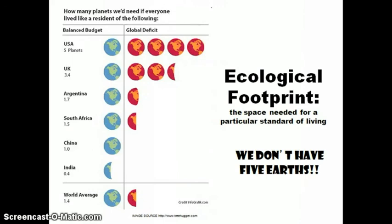A lot of talk today is about our ecological footprint. Biologists often talk about carrying capacity. An ecological footprint is the estimation of biologically productive space — land and water — needed to support a particular standard of living or lifestyle. For everyone on Earth to live like most people do in the U.S., we would need five more Earths.